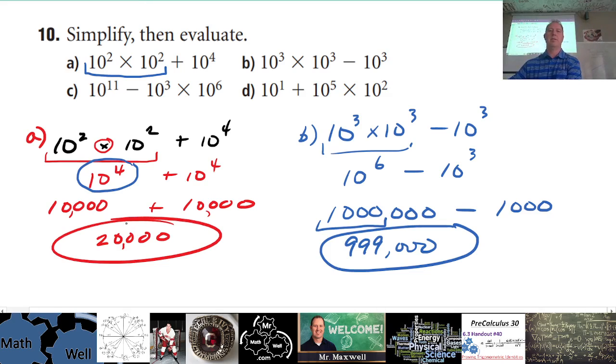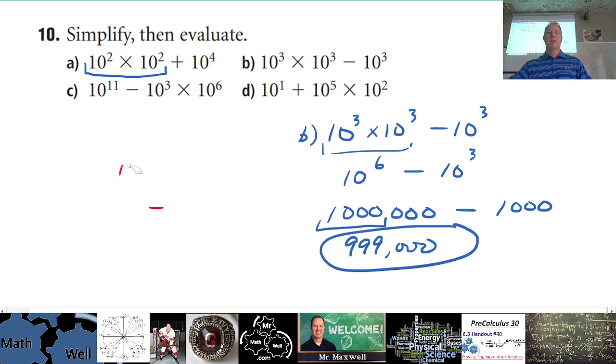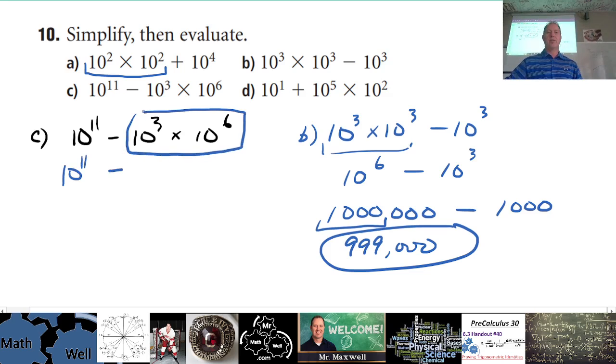Okay, what about C? Let's take a look at C now. C says 10^11 - 10³ × 10^6. So order of operations says that I do need to do the multiplication first. We have a rule for that. We don't have a rule for subtraction, so I'll rewrite 10^11 and I will subtract this.